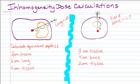We're going to start with a lung example. If we look at a lung homogeneity factor of 0.25, and we look at this beam entering to the isocenter point, we're going to calculate the equivalent depths.